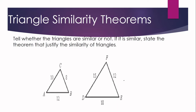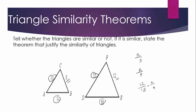For the next example: we have ratios 10 over 15 = 2 over 3, and 8 over 12 = 2 over 3. And AB over 18: 12 over 18 simplifies by a GCF of 6 to give 2 over 3 as well. Since all three pairs of corresponding sides have equal ratios, triangle ABC is similar to triangle DEF by SSS similarity theorem.